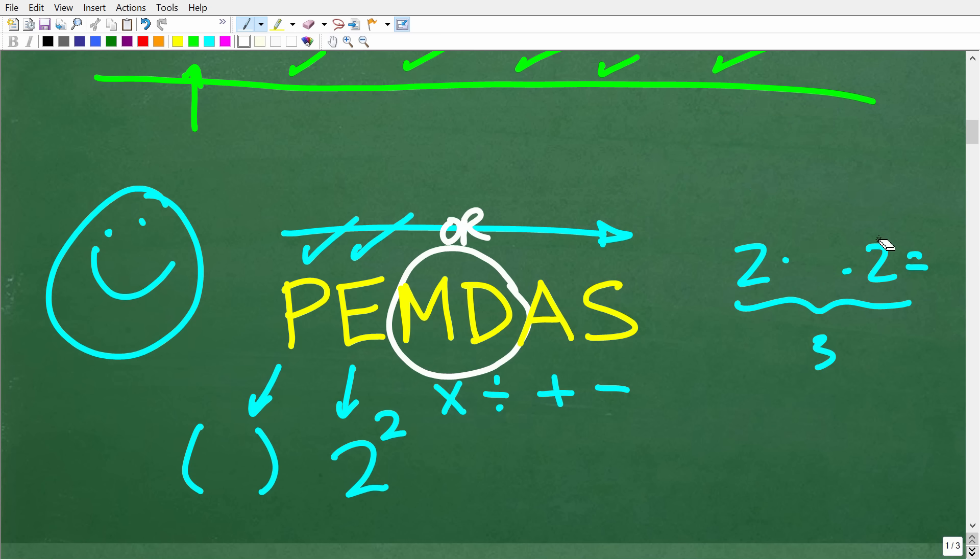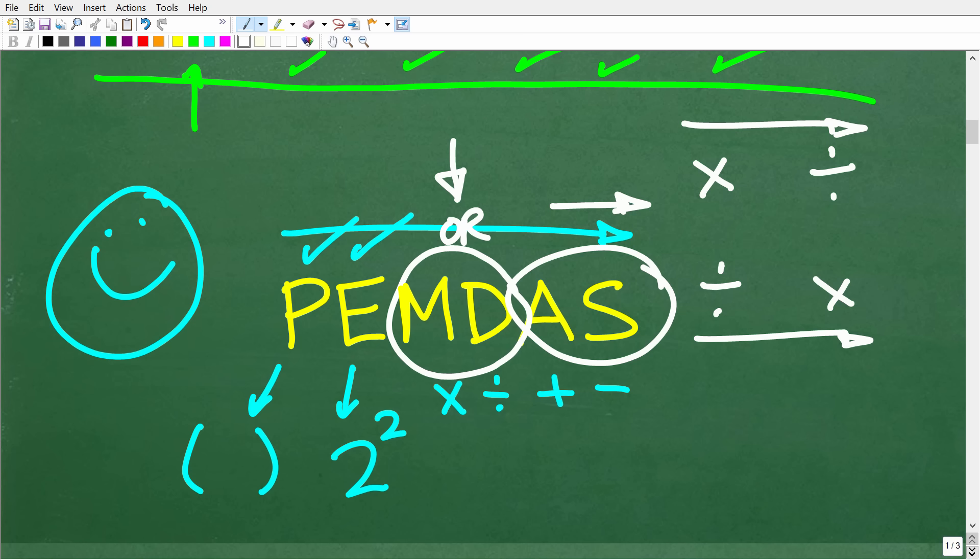So the next thing that we're going to do is any multiplication or division that we have in our problem. And the way we're going to do this is we're going to do whatever we see first from left to right. So if we have multiplication, then division from left to right, we'll do the multiplication first. But if we have division and then multiplication from left to right, we're going to do the division first. So you got to really be paying attention to this step. A lot of people make errors right here. And then addition and subtraction works the same way. It's whatever you see first from left to right.